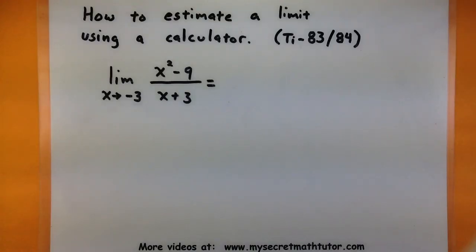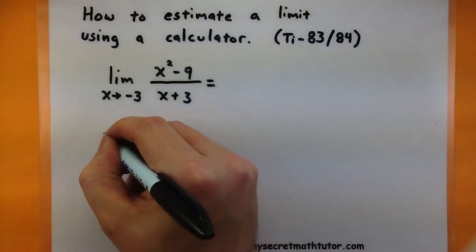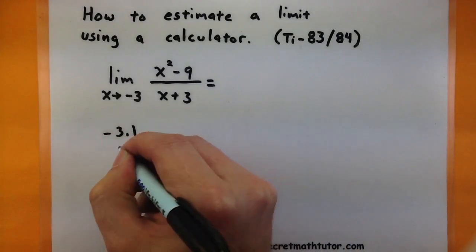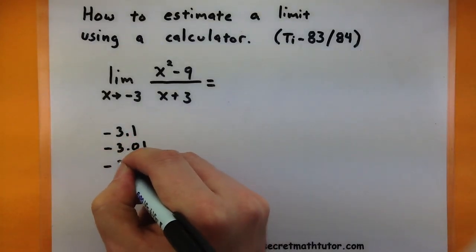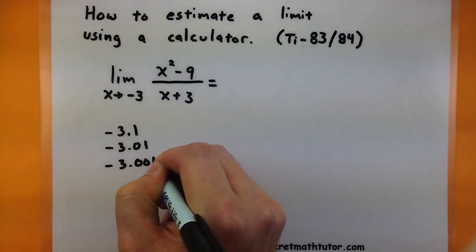So let's go ahead and gather up some x values close to negative 3, then we'll take them and punch it into our calculator and see what the y values are doing. Some x values that I will choose are negative 3.1, negative 3.01, and negative 3.001.